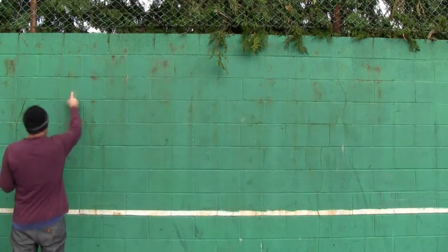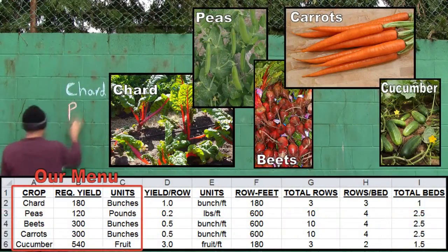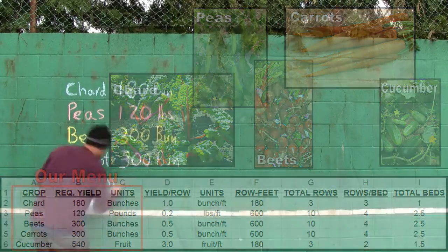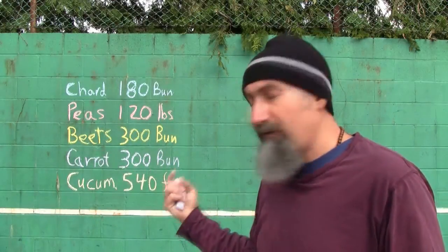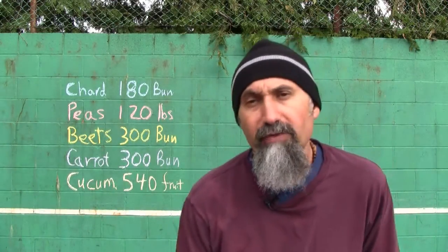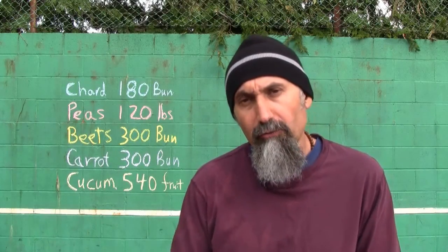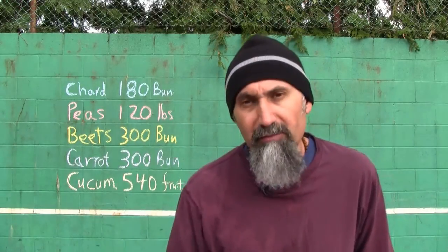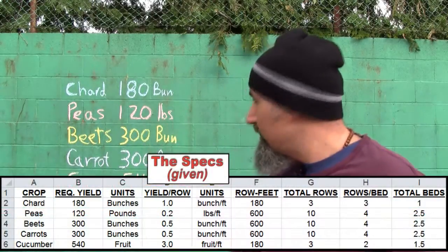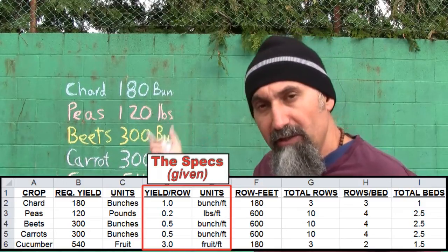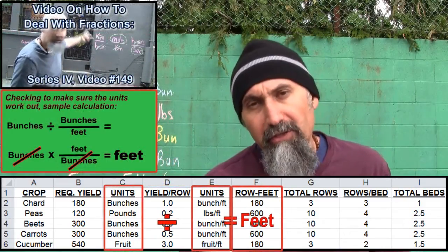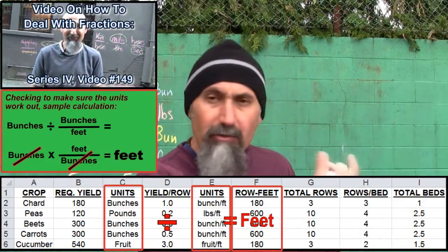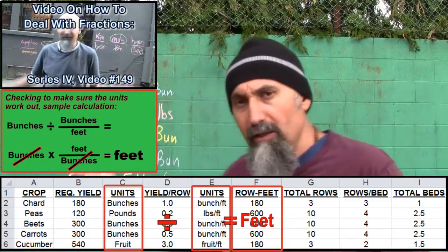Our menu is going to be: 180 bunches of chard, 120 pounds of peas, 300 bunches of beets, 300 bunches of carrots, and 540 cucumbers. To calculate the total row feet per item for our menu, we look up the specs for each crop and divide the total yield we're looking for by the expected yield per foot. That gives us the total row feet we need to provide for our menu.